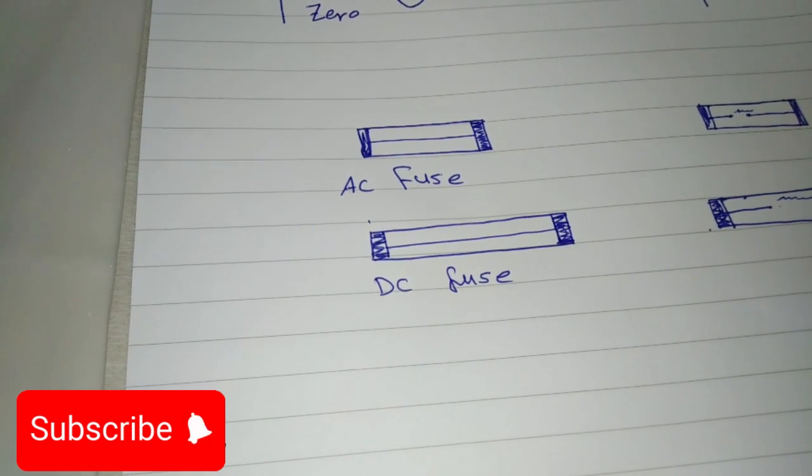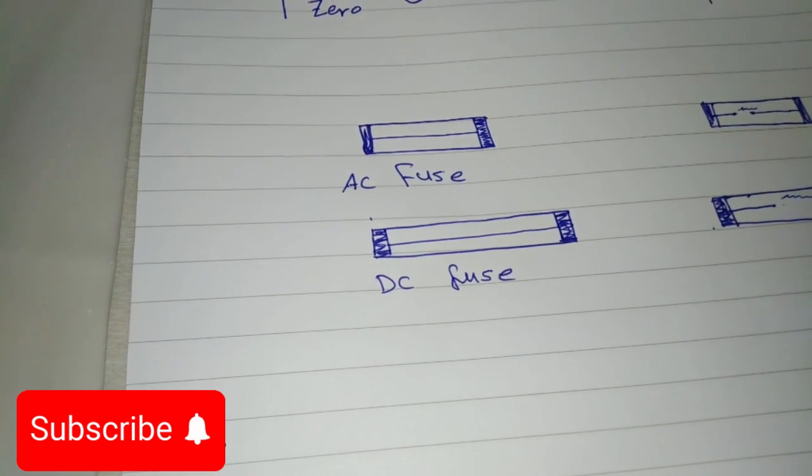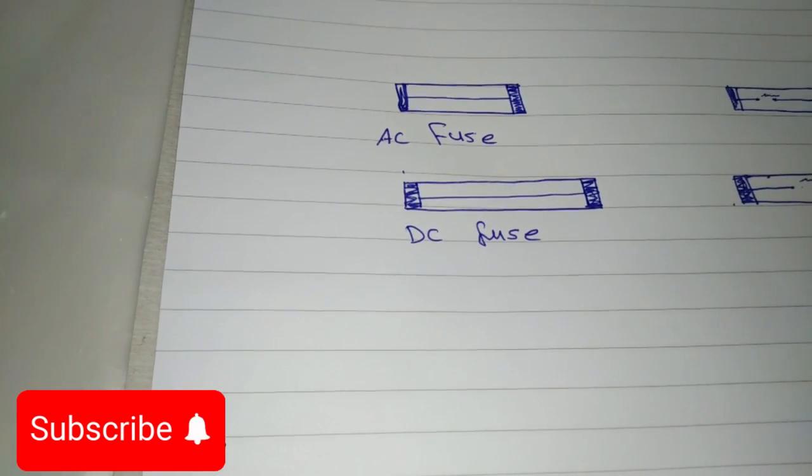Not all guardians are built the same. Yep, we've got AC fuses and DC fuses, and they're not interchangeable like those socks you wear. But why? Let's dive in.